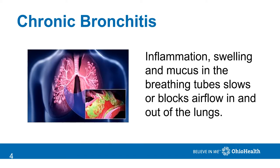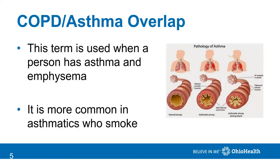Chronic bronchitis is caused by inflammation, swelling, and mucus buildup in the breathing tubes. This slows air flow in and out of the lungs. COPD asthma overlap is a term used when a person has both asthma and emphysema. It is more common in asthmatics who smoke.